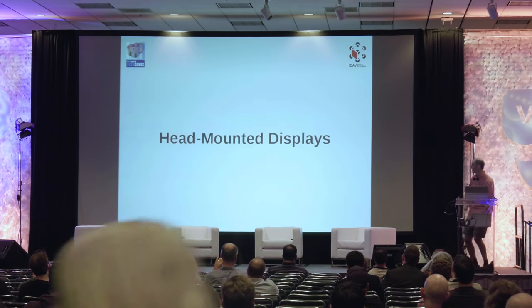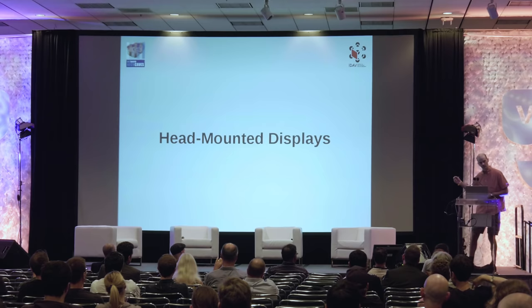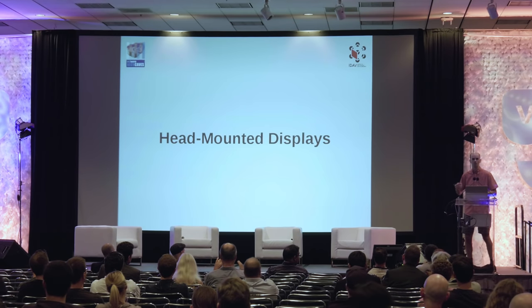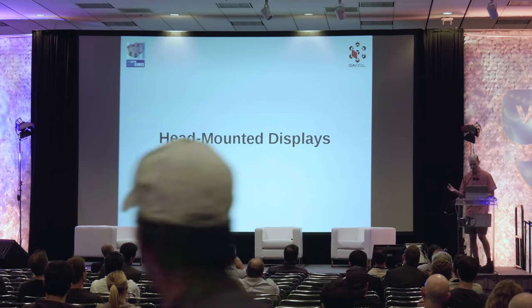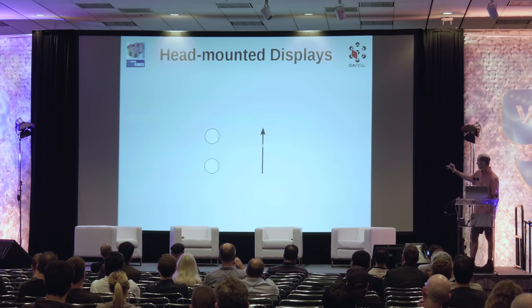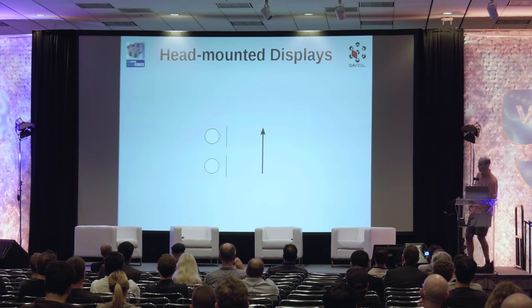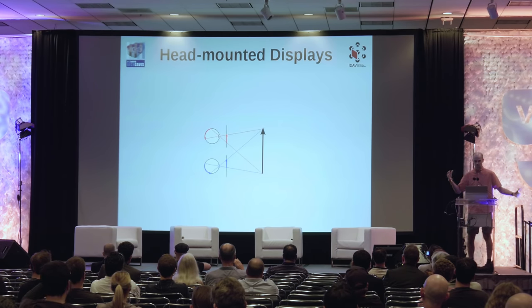But what about head-mounted displays? Good news: they work exactly the same way. We have Alice, we have an object, and instead of surrounding her with giant screens we just put tiny screens right in front of her eyes and do the exact same thing — extend light from the object into the eye, project onto the screens, draw on the screens. That's it.